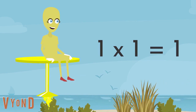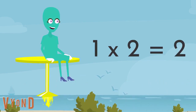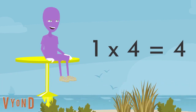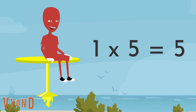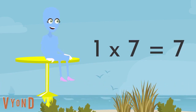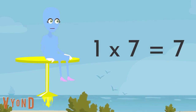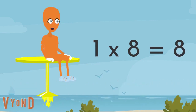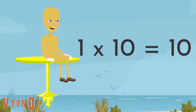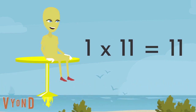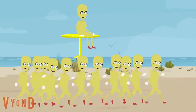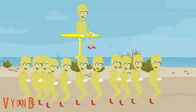One times three is three. One times four is four. One times five is five. One times six is six. One times seven is seven. One times eight is eight. One times nine is nine. One times ten is ten. One times eleven is eleven. One times twelve is twelve. What do I do next? Now try it on your own!